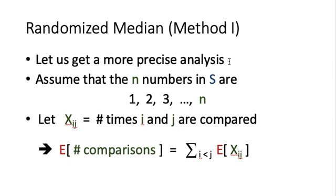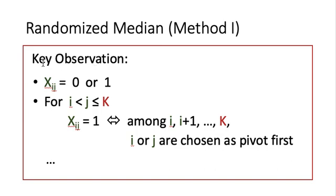Similar to the analysis of randomized quicksort, without loss of generality we assume the n numbers in S are 1, 2, 3, up to n. We define the random variable x_ij to be the number of times that i and j are compared. The expected number of comparisons equals the summation over all pairs i, j of the expected value of x_ij — by linearity of expectation. A key observation: x_ij is either 0 or 1, meaning any two numbers i and j are either not compared, or compared at most once, and they are compared when i or j is selected as the pivot.